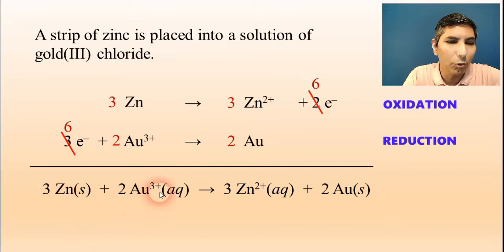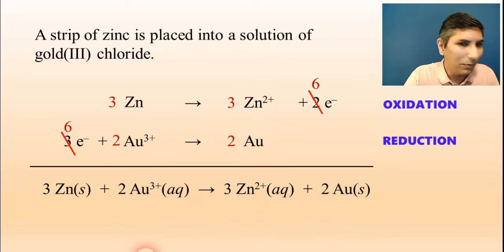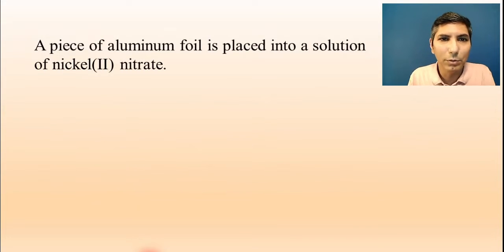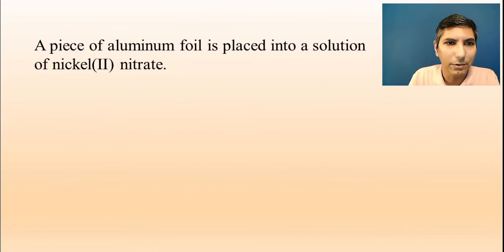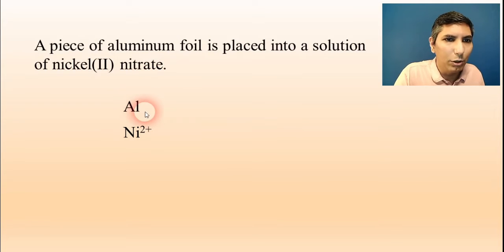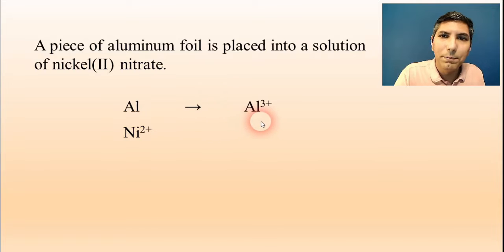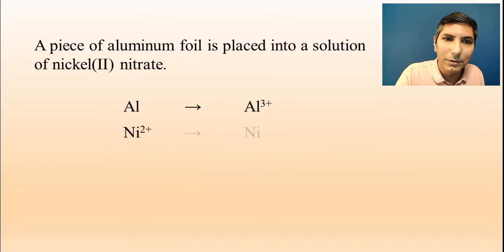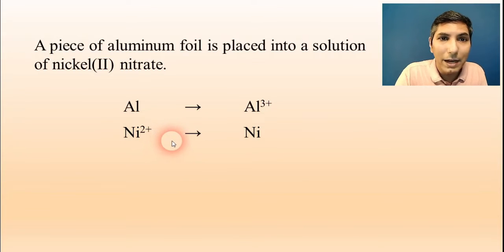The overall balanced equation is: 3Zn + 2Au3+ → 3Zn2+ + 2Au. Let's try another: a piece of aluminum foil is placed into a solution of nickel-2-nitrate. We have aluminum, Al, and nickel-2 ions, Ni2+. The nitrate is a spectator ion. Aluminum turns into Al3+ (from the periodic table), and Ni2+ turns into elemental nickel, Ni.